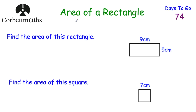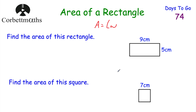Today we're going to be looking at the area of a rectangle. To find the area of a rectangle, the area is equal to the length multiplied by the width. Here we've got a rectangle and we want to find its area — feel free to press pause and find the area of this rectangle, and also find the area of this square if you want to.